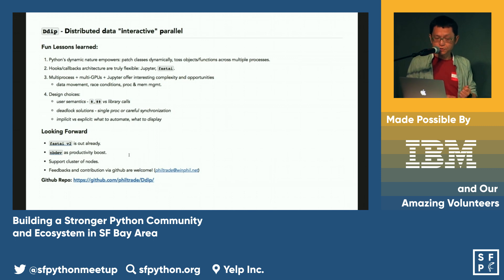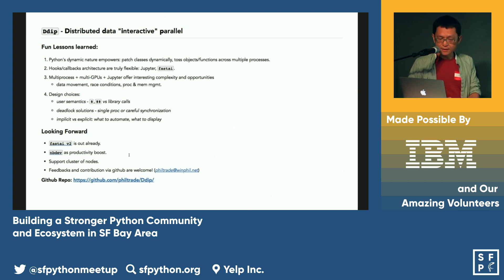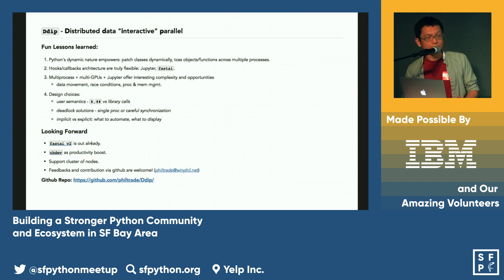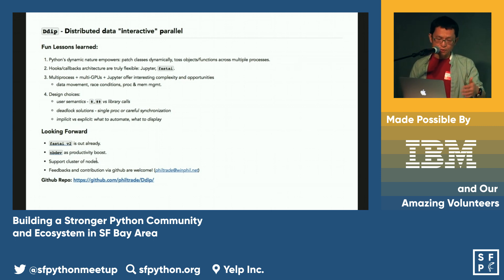It's been a great experience learning all the powerful features and hacks one can do with Python. I was really impressed by the hooks and callback architecture in Jupyter and Fast.AI — they allow very flexible design and extensibility. Of course there's complexity in dealing with multiple processes. Looking forward, I'm really excited about porting and extending this tool to support Fast.AI version 2 and experiencing development using nbdev.